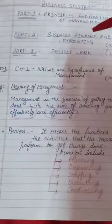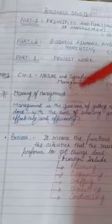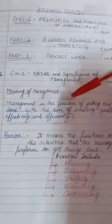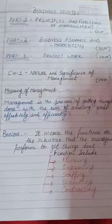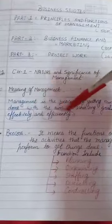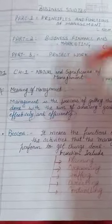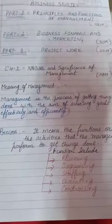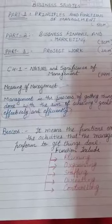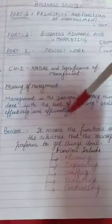First, we understand the meaning of management. What is management? Management is the process of getting things done with the aim of achieving goals effectively and efficiently. Management is a process and we have to complete that process with the aim of achieving the goal effectively and efficiently.